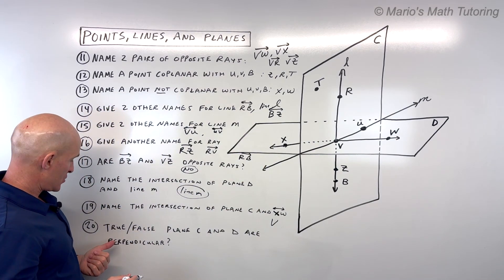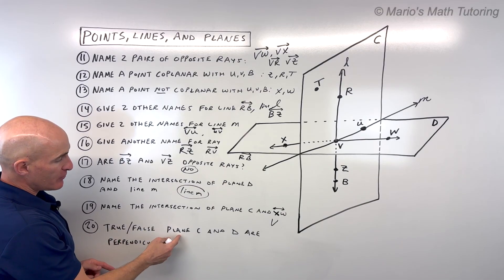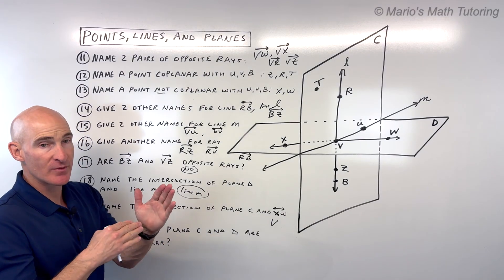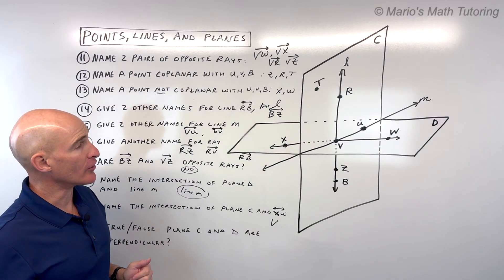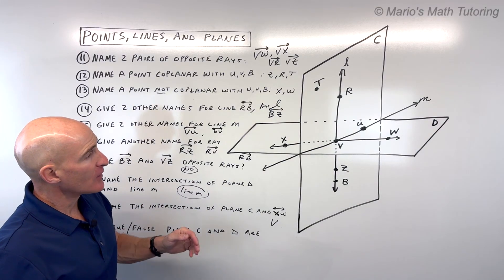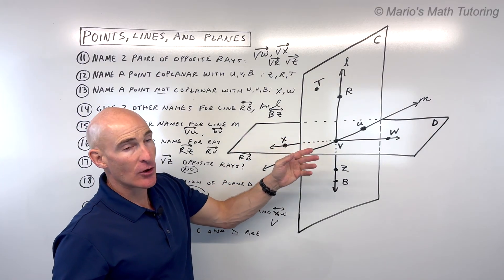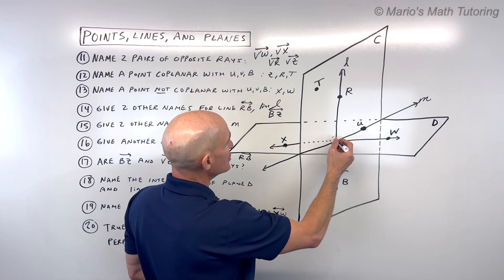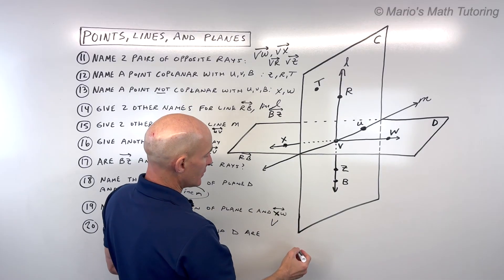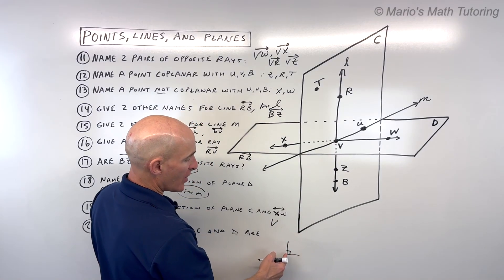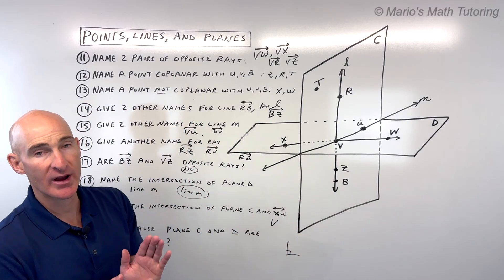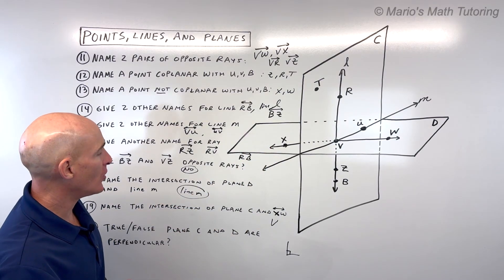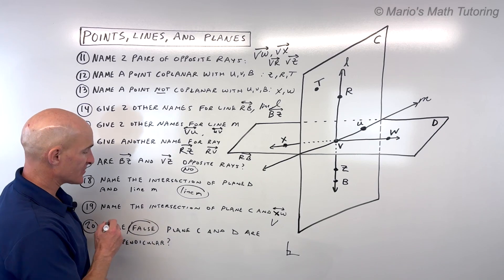For number 20, true or false, plane C and plane D are perpendicular. Perpendicular means at a right angle to one another. It does look like they form a right angle. But in order for us to know that it's a right angle, we'd have to have some kind of indication, you'd see a little box here, a little square to indicate a right angle. We don't have that here. We can't jump to that conclusion. So we're going to say that's a false conclusion.